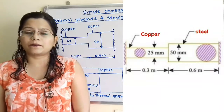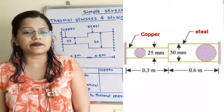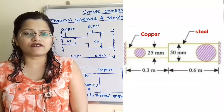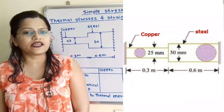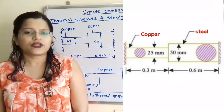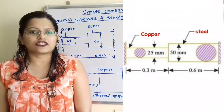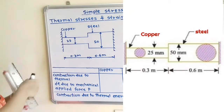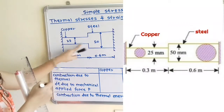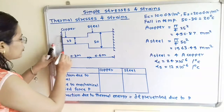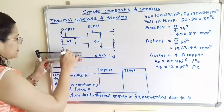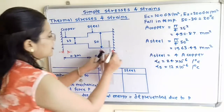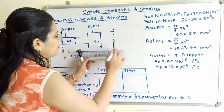In this question, a composite bar made up of copper and steel is held between two fixed supports, and we have to find out the stresses developed due to a fall in temperature from 50 degrees Celsius to 30 degrees Celsius. We know that due to a decrease in temperature, contraction in the bar is taking place. We will first show the contraction taking place in copper up to the fixed support, and for the steel material also, we will show the contraction due to the fall in temperature.